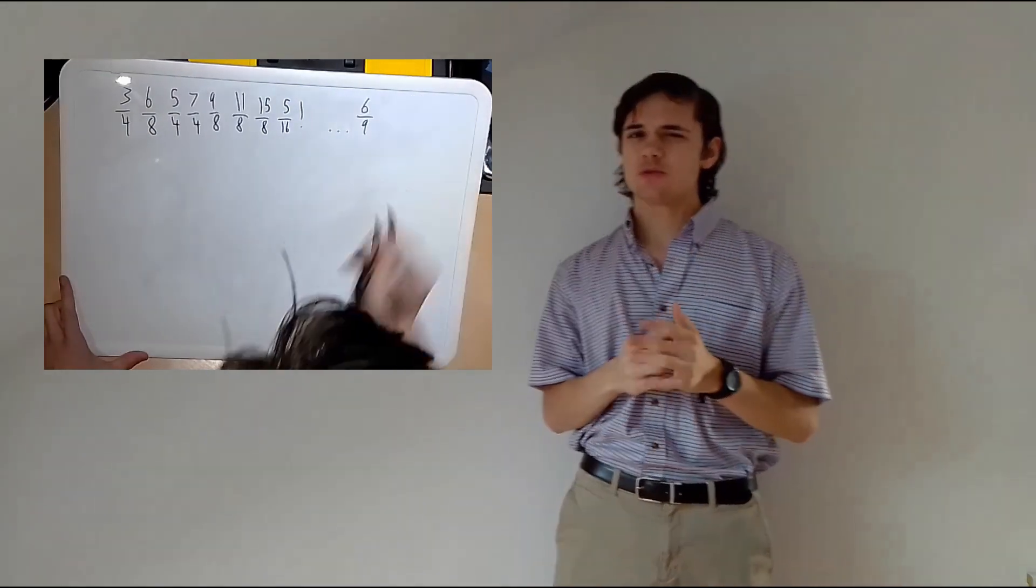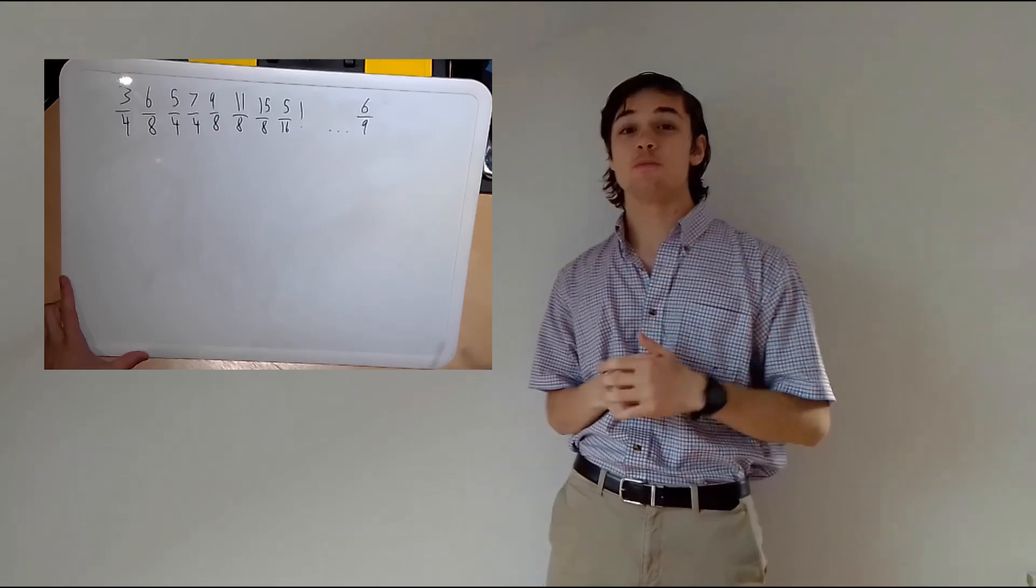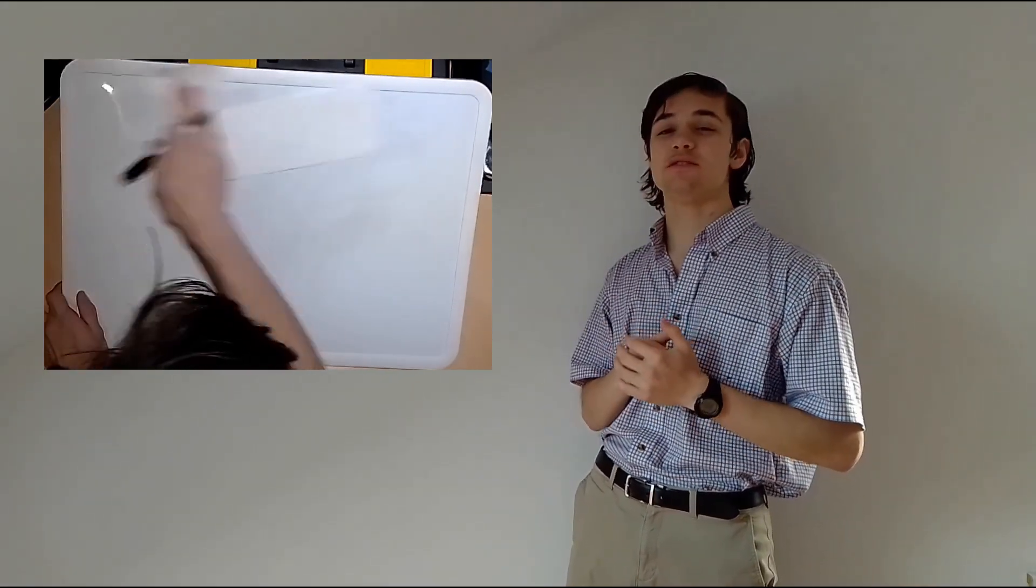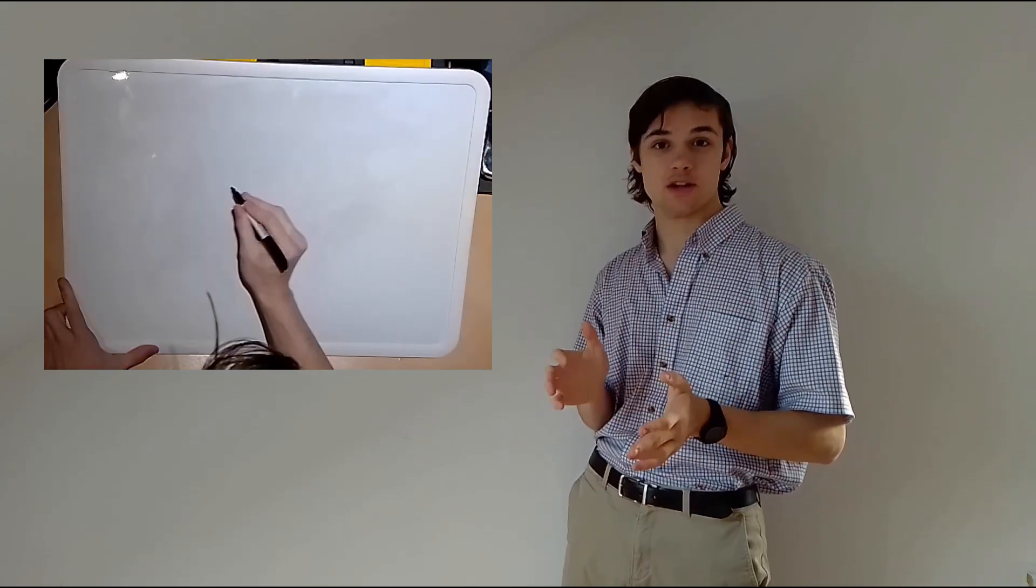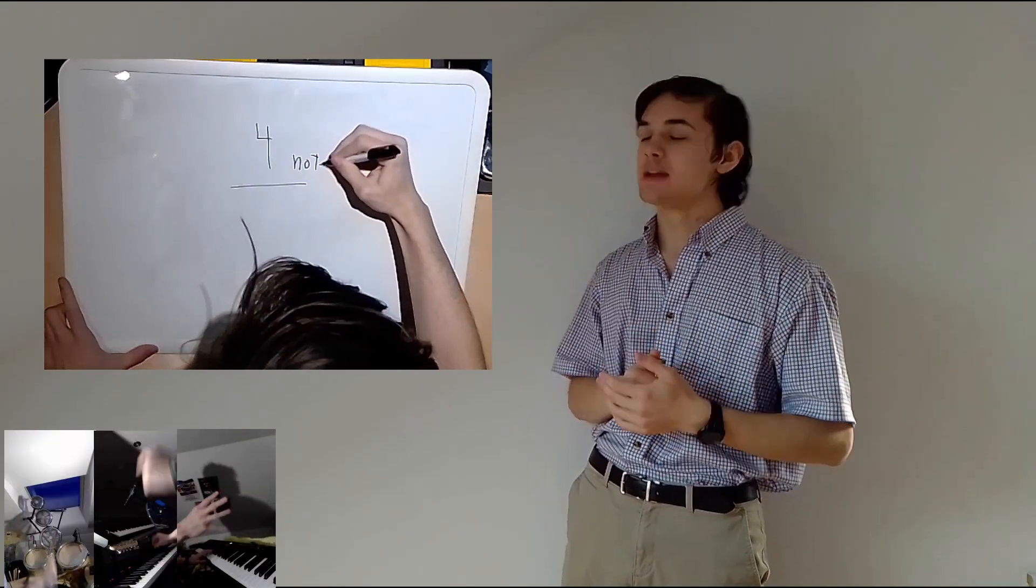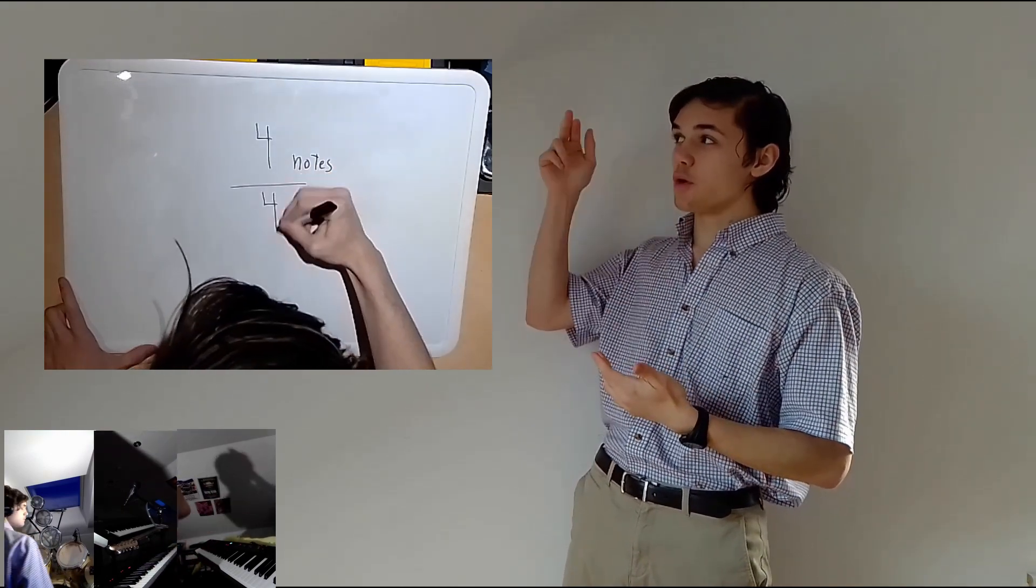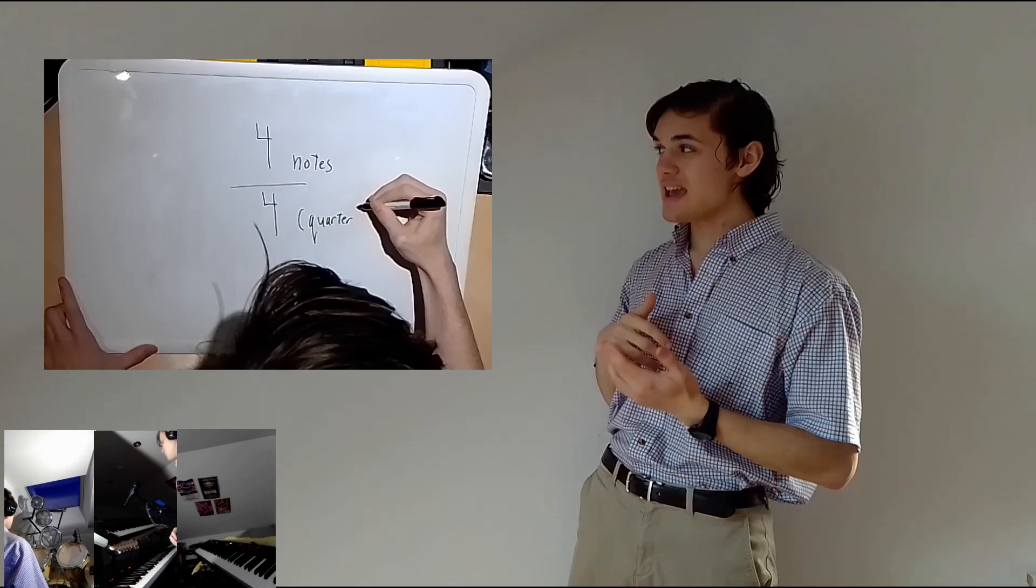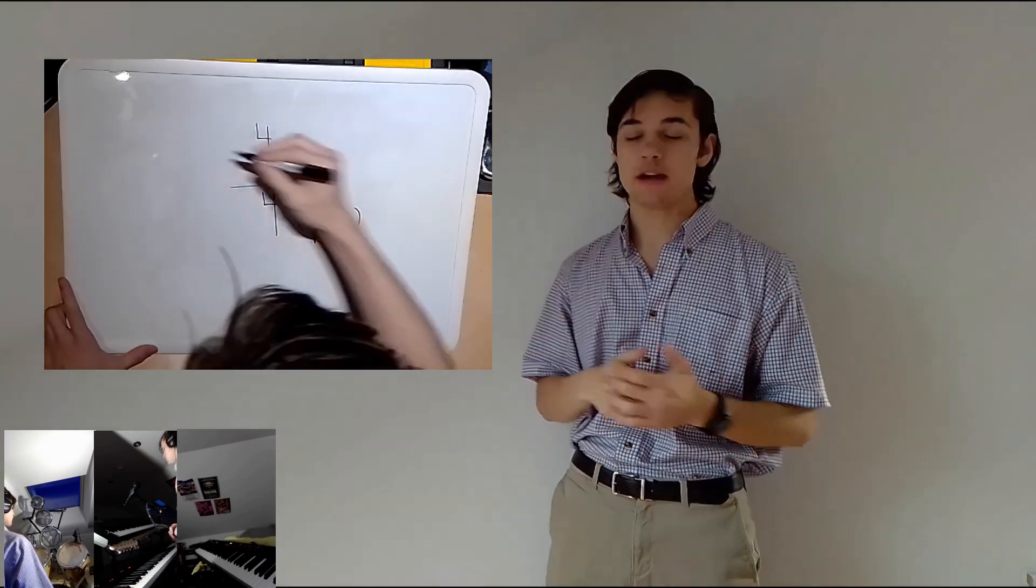But before we get into that, let's make sure we understand time signatures first. When you construct a time signature, you have two numbers. The top number tells you how many notes to play in a measure. The bottom number tells you what type of note you're playing. So here, you would play four quarter notes, or in this example, six eighth notes. Makes sense, right?